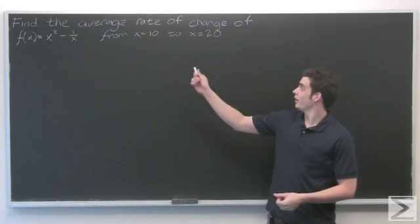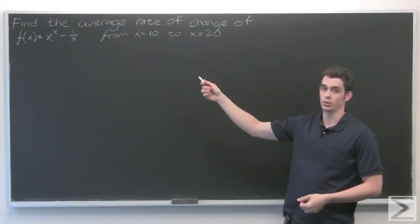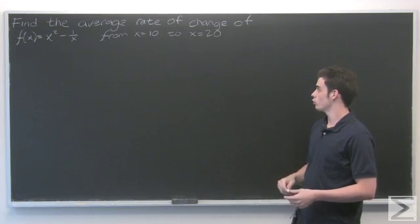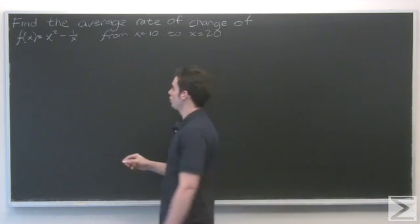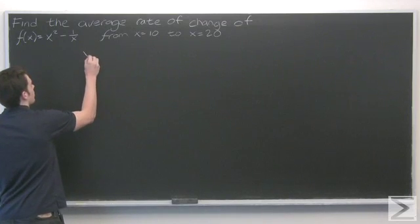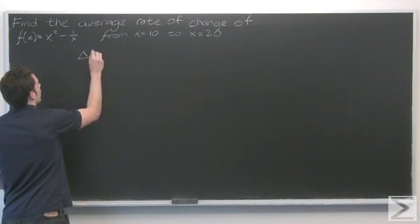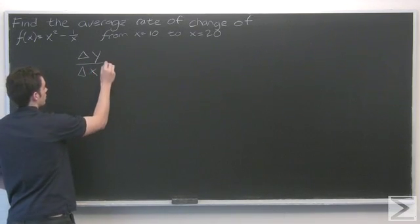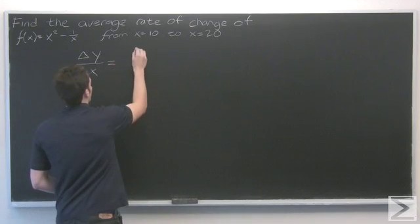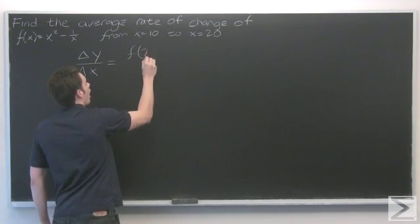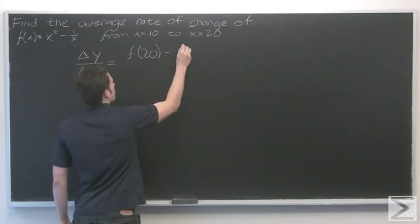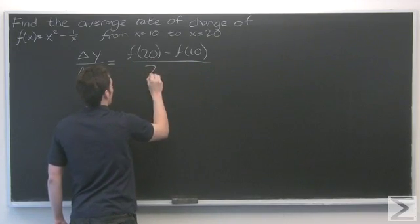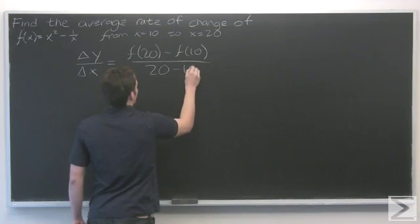In this problem, we're asked to find the average rate of change of f of x equals x squared minus 1 over x, from x equals 10 to x equals 20. Recall that symbolically, the way that we want to express this is the change in y over the change in x. So this is going to be f of 20 minus f of 10, divided by 20 minus 10.